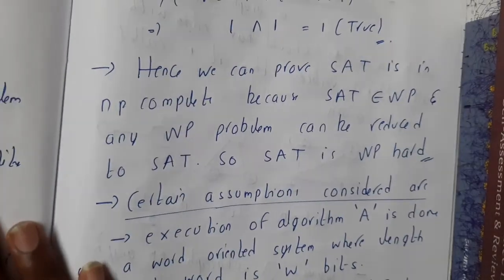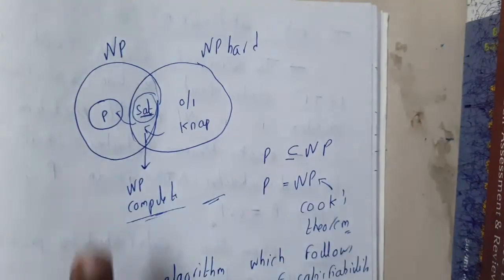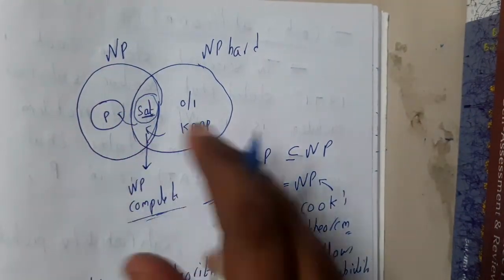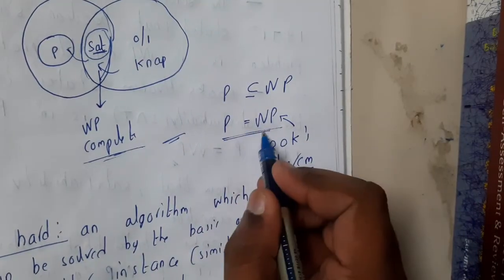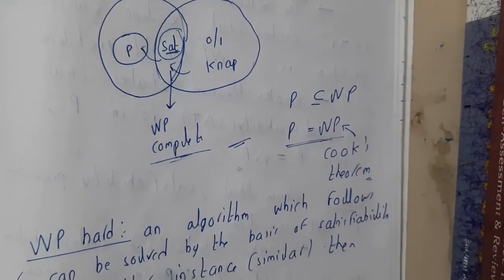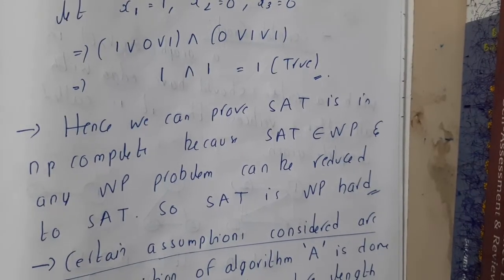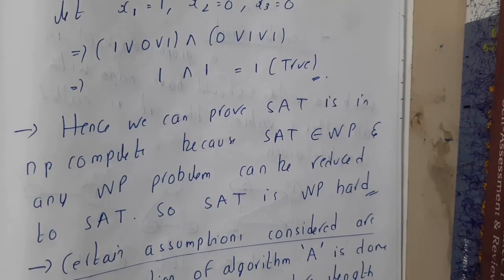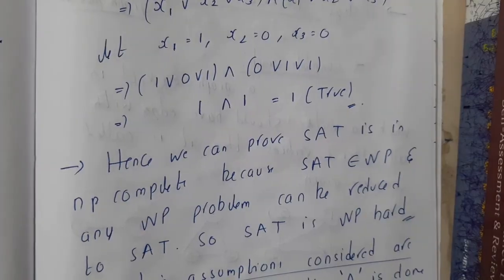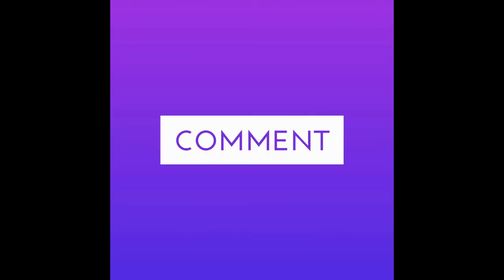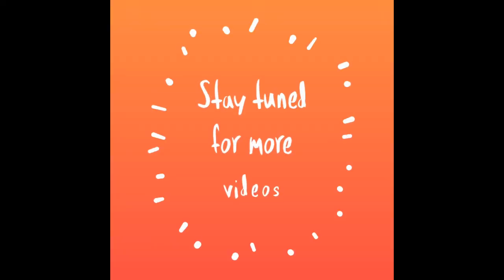We are done with the introduction part of this chapter. In the next lecture we will go through Cook's theorem. Cook stated that polynomial time and non-polynomial time are both equal. We'll be discussing an introduction to the theorem and going through some assumptions, as the exact theorem was difficult to find. In the next lecture we will be continuing with Cook's theorem. Thank you for watching.